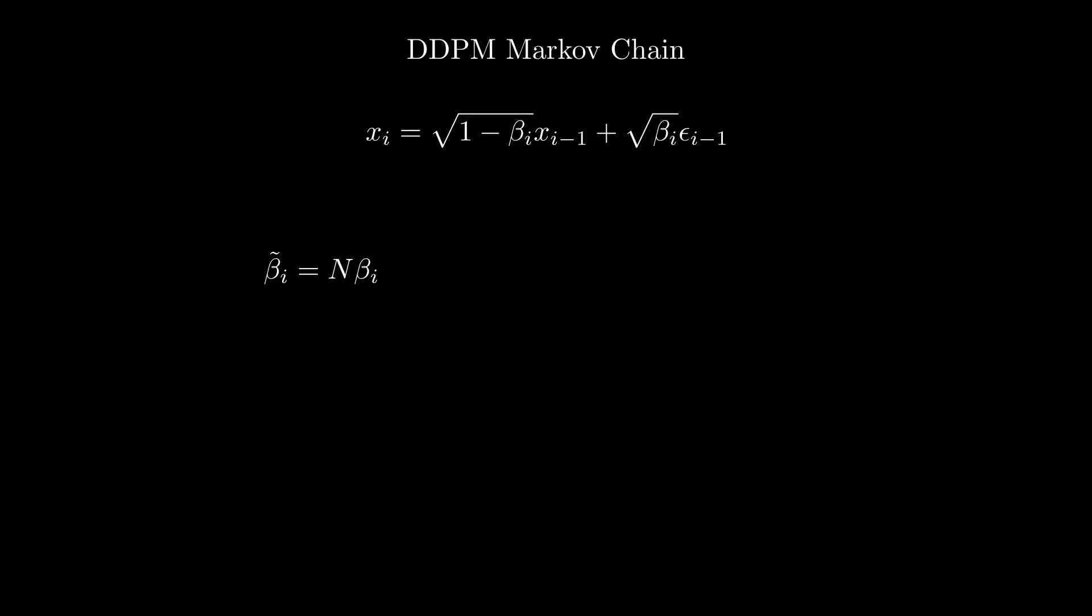The first step is to define a new quantity, which we'll call beta tilde. It's simply the number of steps big N multiplied by the noise variance beta. By plugging this into the original equation, we get a slightly different but equivalent formulation.